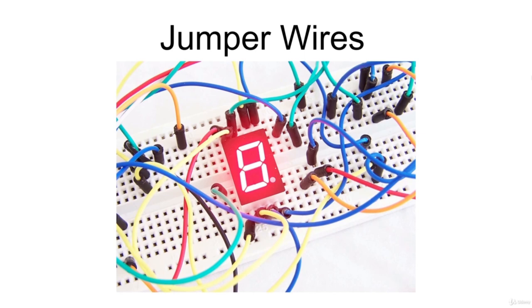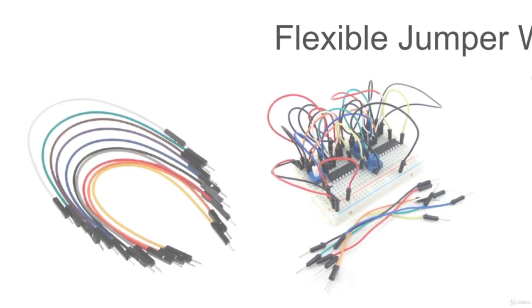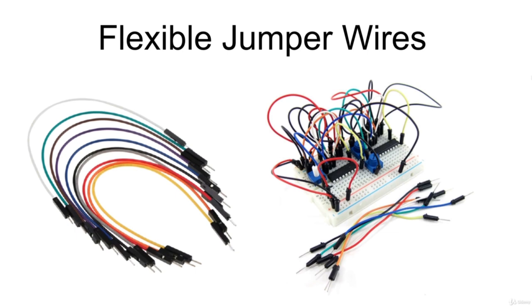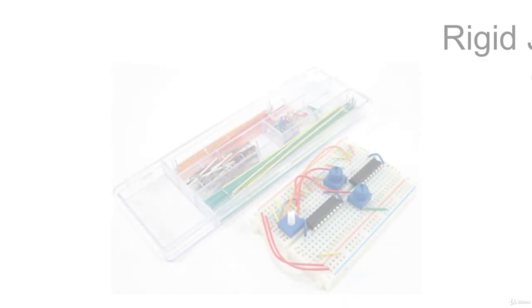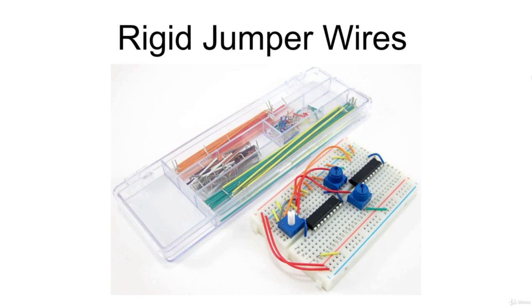There are two main different options available when purchasing jumper wires. Flexible jumper wires are made of a flexible wire with a rigid pin attached to both ends. These wires are easy to use for beginner circuits but can get very messy when the circuit becomes more complex. Another option are rigid jumper wires that have both ends bent down 90 degrees, so they are ready to put into a breadboard. These kits are convenient because they come with wires of many different pre-cut lengths.